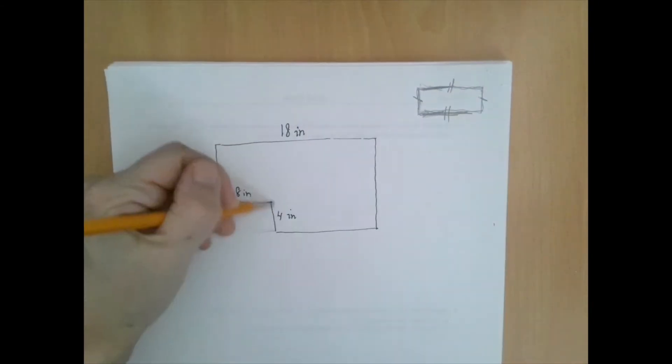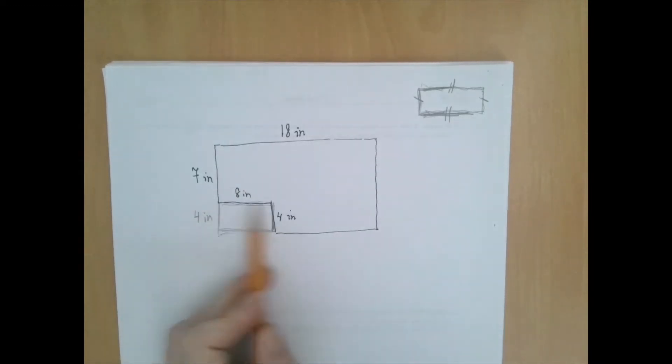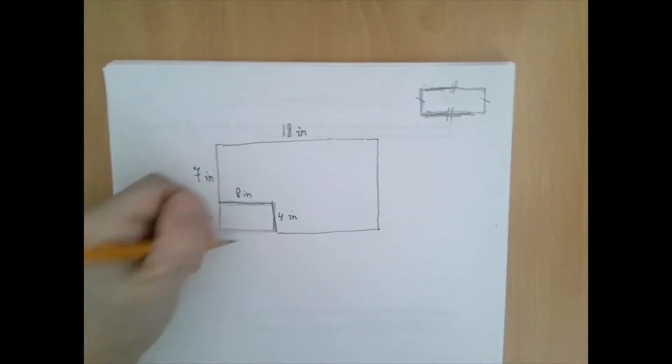They preserve distances. If we look at this little rectangle in the corner, if this side is 4 inches long, so is this one. And if this side is 8 inches long, so is this one.